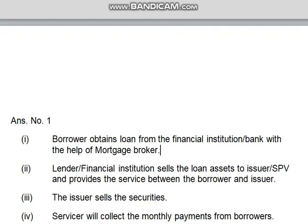Number 2 is: the lender financial institution sells the loan to an issuer. A service provider provides the service between the borrower and the issuer. The lender provides the loan through someone's help — it can be a service provider or third party agency acting between the borrower and issuer.